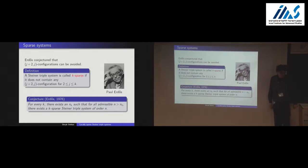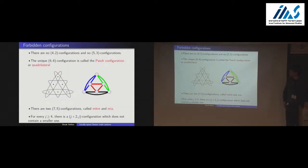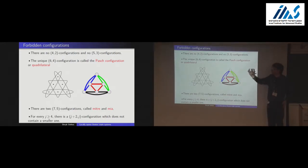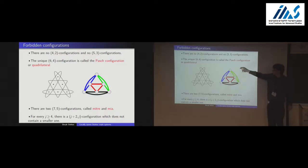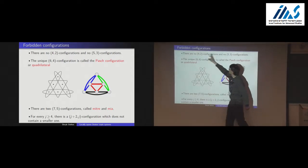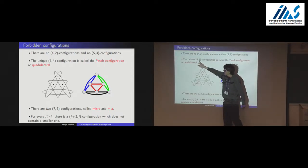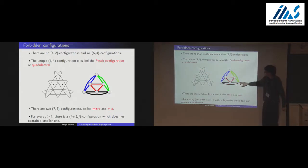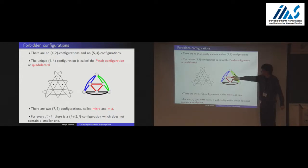How should you think about this conjecture? In terms of forbidden configurations: for K equals 4, a 4-2 configuration would need 4 points and 2 triples — that doesn't exist — and similarly there's no 5-3 configuration. The first time the conjecture does more than Kirkman's theorem is K equals 4, which forbids a configuration on 6 points with 4 triples, called the Pasch configuration.